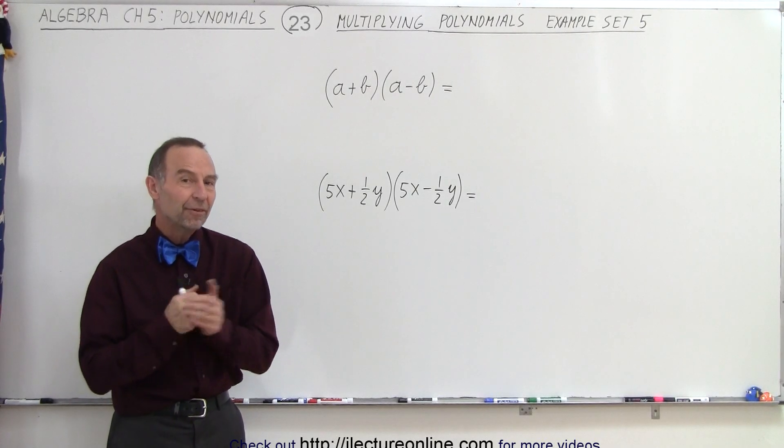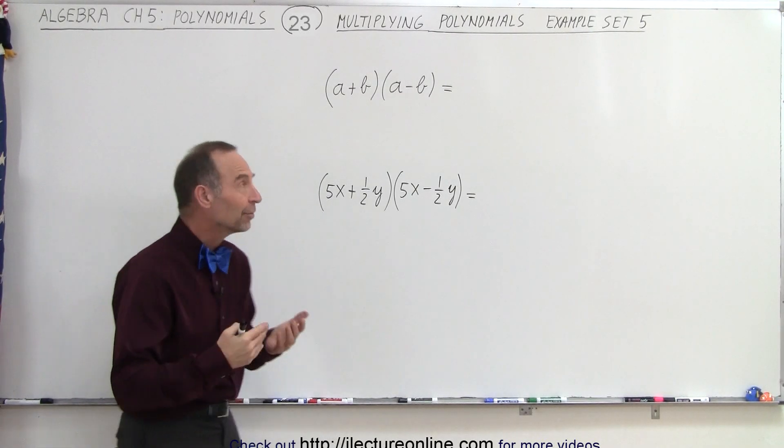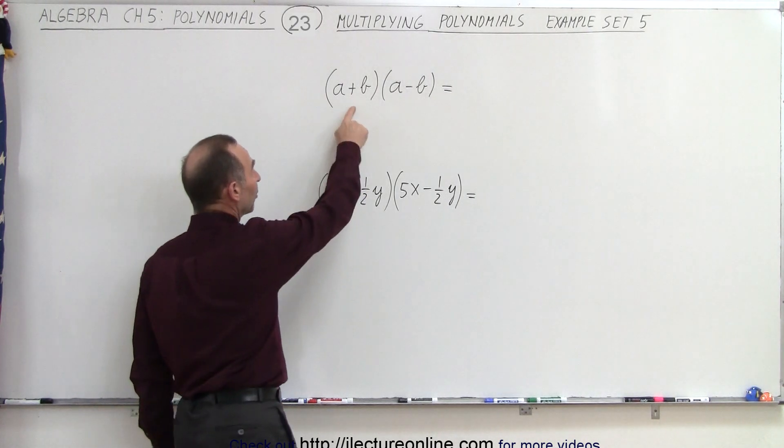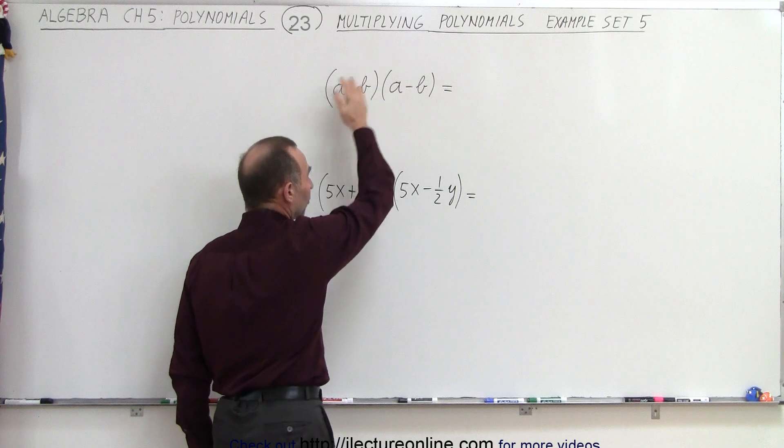Welcome to our lecture online. The fifth set involves a very common type of binomial multiplication. We have an a plus b times an a minus b as the general type.